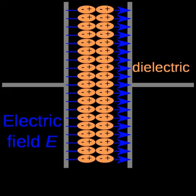A dielectric is an electrical insulator that can be polarized by an applied electric field. When a dielectric is placed in an electric field, electric charges do not flow through the material as they do in a conductor, but only slightly shift from their average equilibrium positions, causing dielectric polarization.